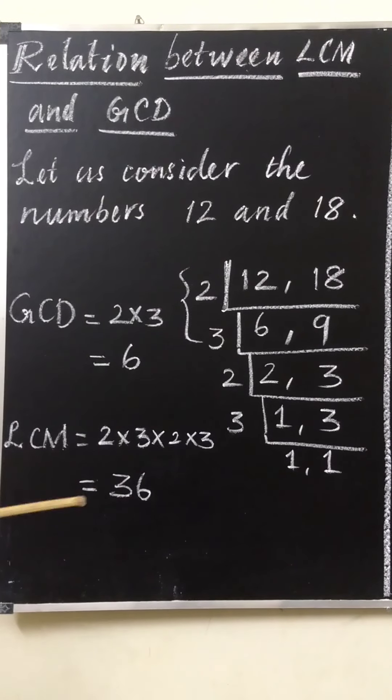Hope that you have understood the concept — the relation between GCD and LCM of polynomials. Here is your homework: Exercise 3.3, first sum. Just three sums are there. If you have any doubt, I will explain it in the next class. Thank you, children.